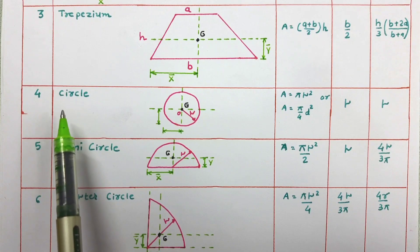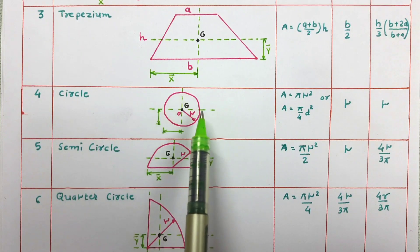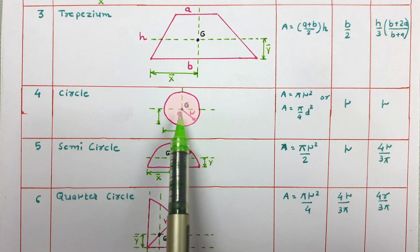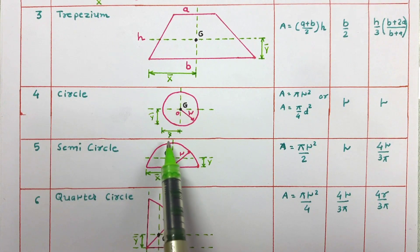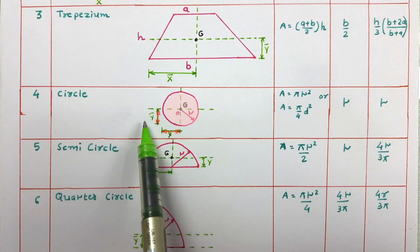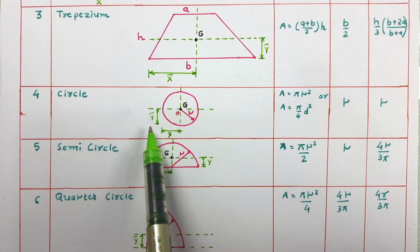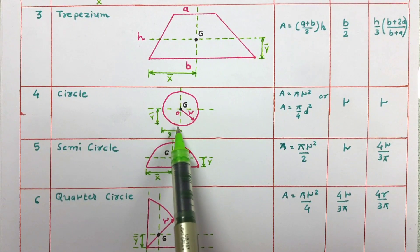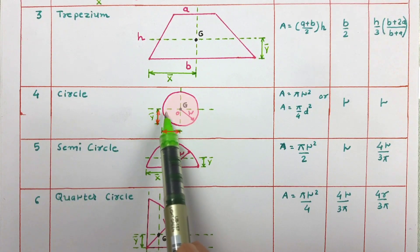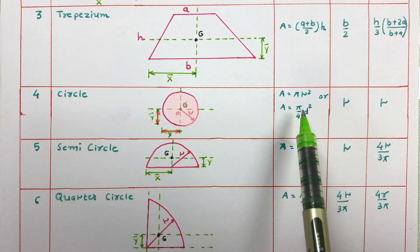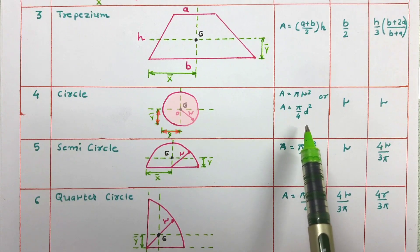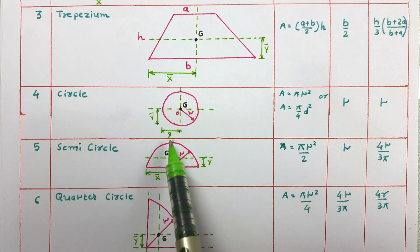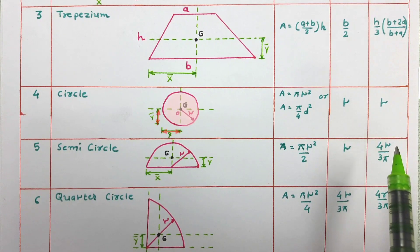The next figure is the circle. The center point of this circle is the centroid of the circle — here center and centroid are the same. The centroidal distances x-bar and y-bar are both equal to the radius r. The area of a circle equals pi r squared, or equivalently pi by 4 times d squared.